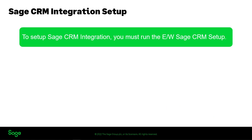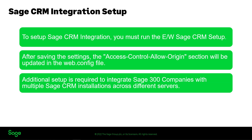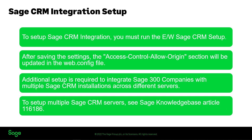Instead, it will now only allow access from the specified Sage CRM server name entered. To set up Sage CRM integration and update the web.config file, you must run the EW Sage CRM Setup to configure where the Sage CRM server is located. Once you have saved the settings, the access control allow origin section will be updated in the web.config file. If you are integrating Sage 300 companies with multiple Sage CRM installations across different servers, additional setup will be required. To set up multiple Sage CRM servers, see Sage Knowledge Base Article 116186.